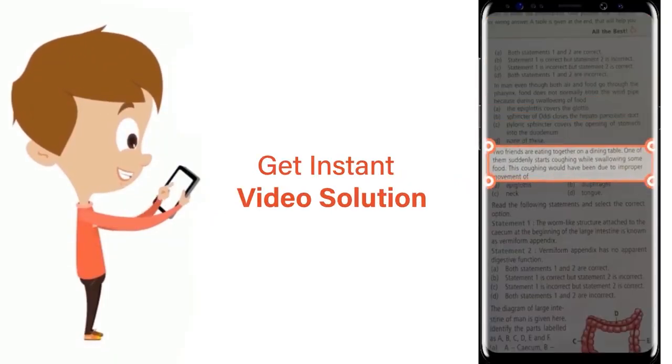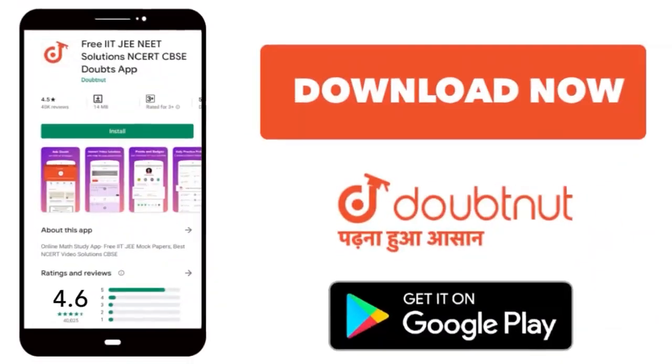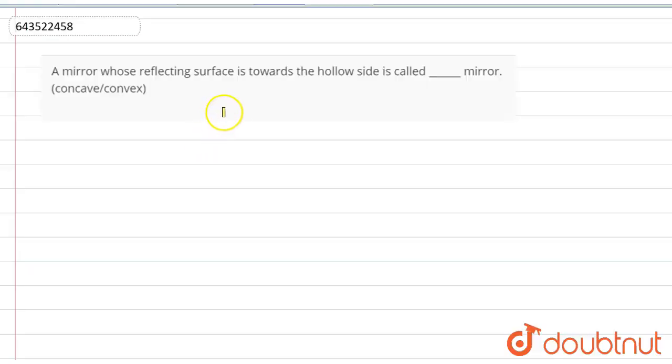Download Doubtnet app today. Hello everyone, we have a statement here which says: a mirror whose reflecting surface is towards the hollow side is called dash mirror. We need to choose between concave and convex, so we need to understand these concave and convex mirrors.